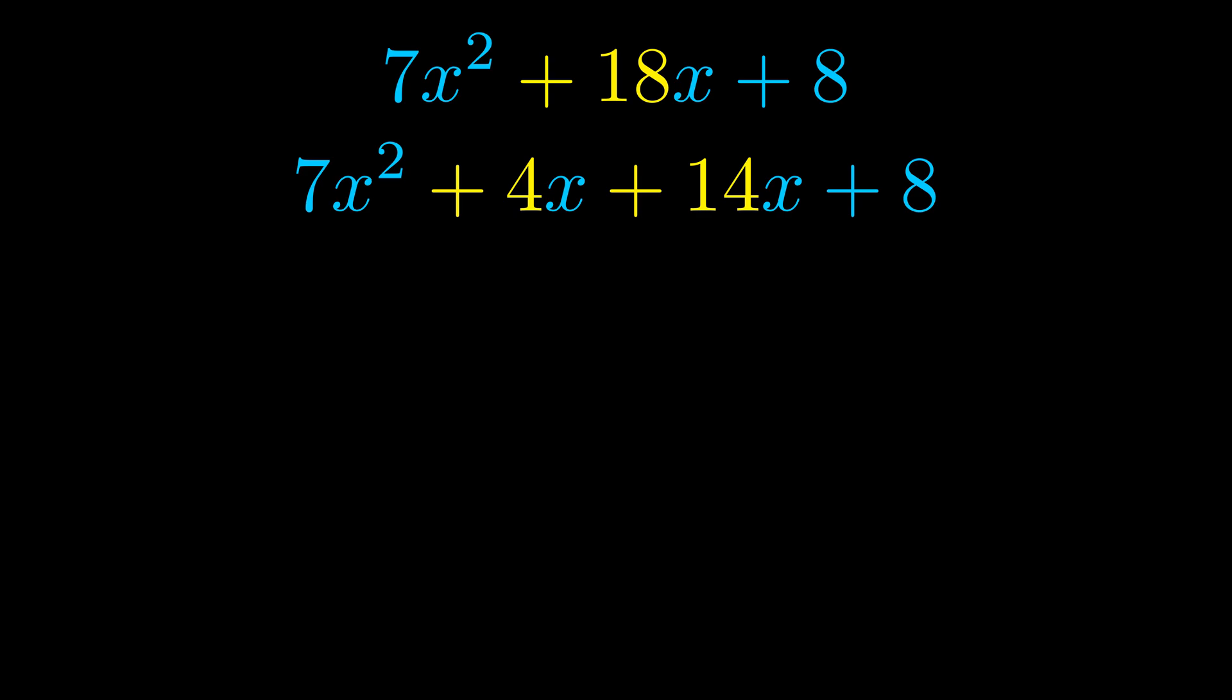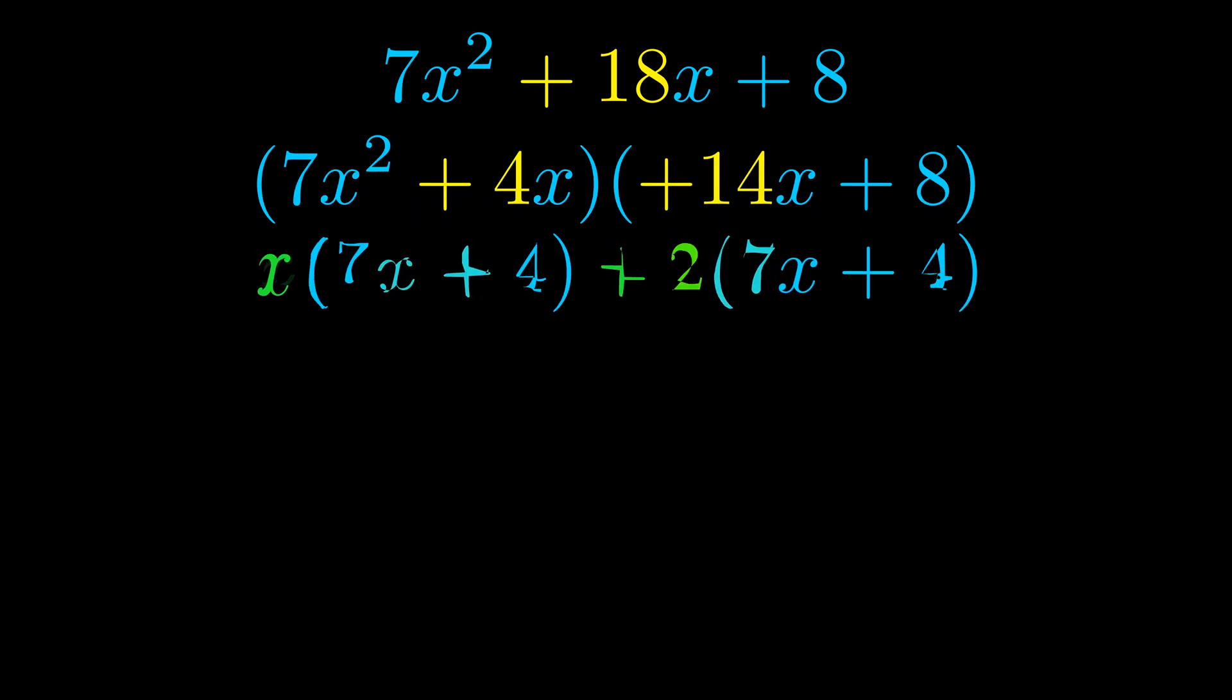Once we've done this we go ahead and put parentheses around the first term and the last term, and we do that so that we can take the greatest common factor out of both terms. We can see the greatest common factor is now outside in green.